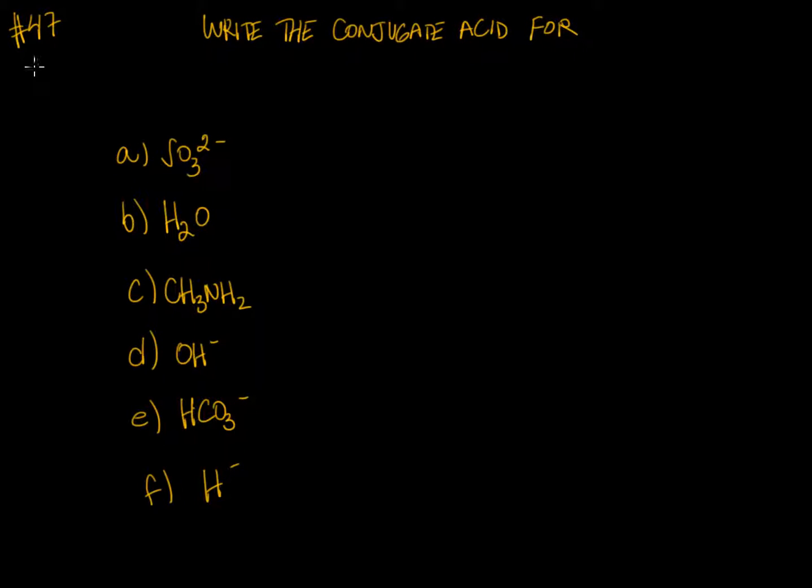Here's chapter 14, number 47 from McMurray's chemistry book. It asks us to write the conjugate acid for different formulas. To write the conjugate acid, you basically need to add H+ to your molecule.